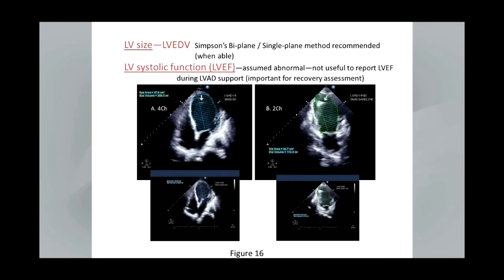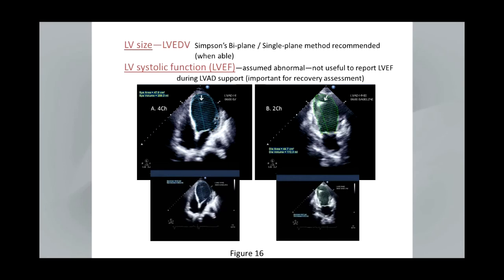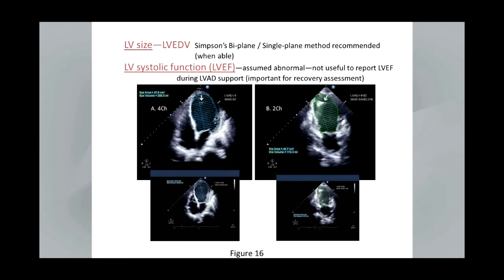When it comes to looking at left ventricular size, we recommend the left ventricular internal diameter measurement because it's very reproducible, although it usually underestimates LV size. We recommend, when possible, the Simpson's biplane or single plane method when available with these newer devices. When it comes to left ventricular ejection fraction, this is assumed abnormal and isn't particularly useful during continuous LVAD support, so we don't go to great extremes to report the left ventricular ejection fraction except in the setting of the recovery assessment, in which case it can be very helpful.